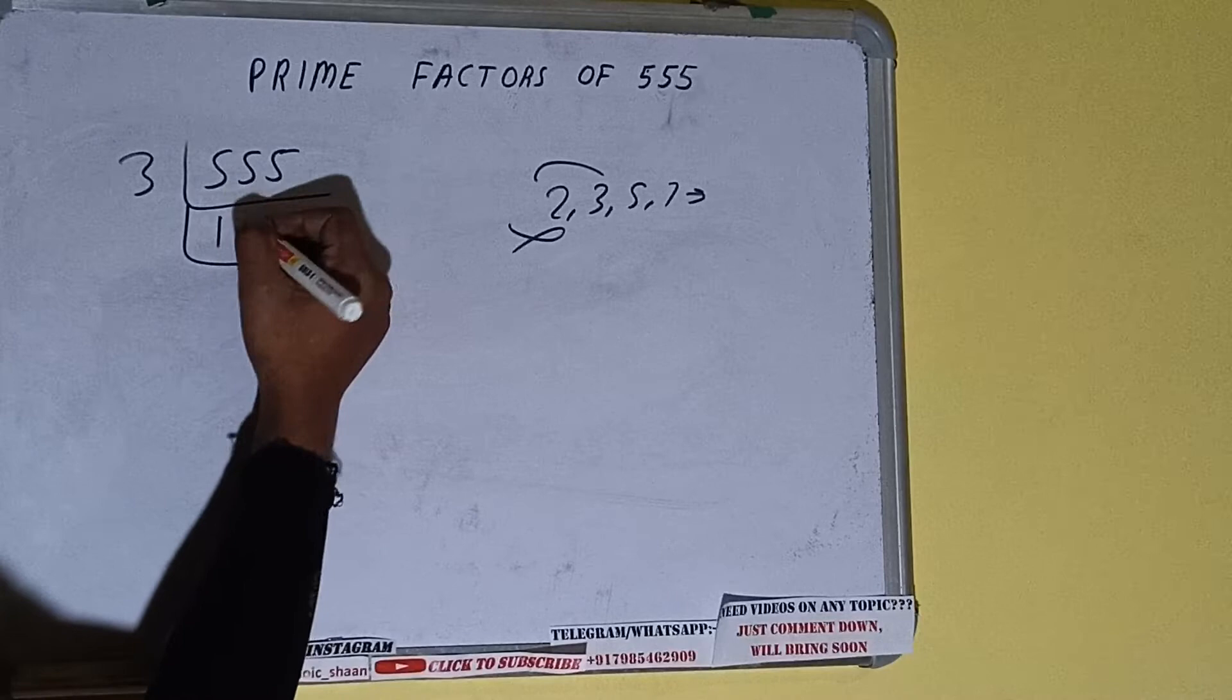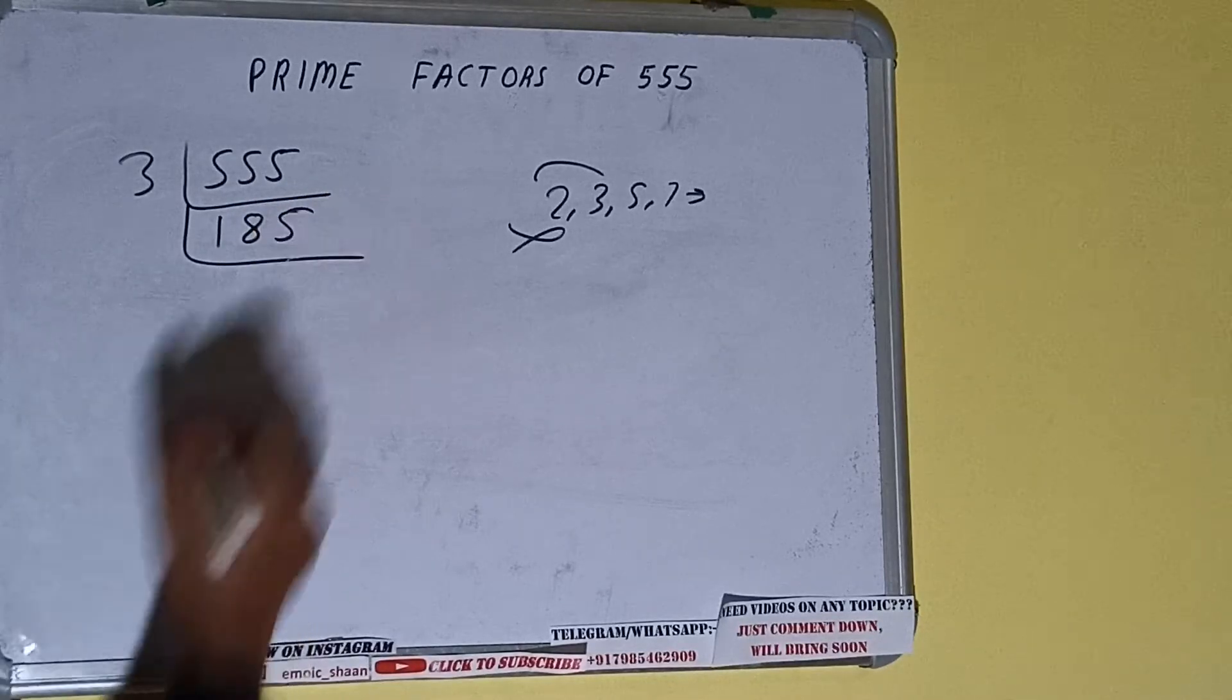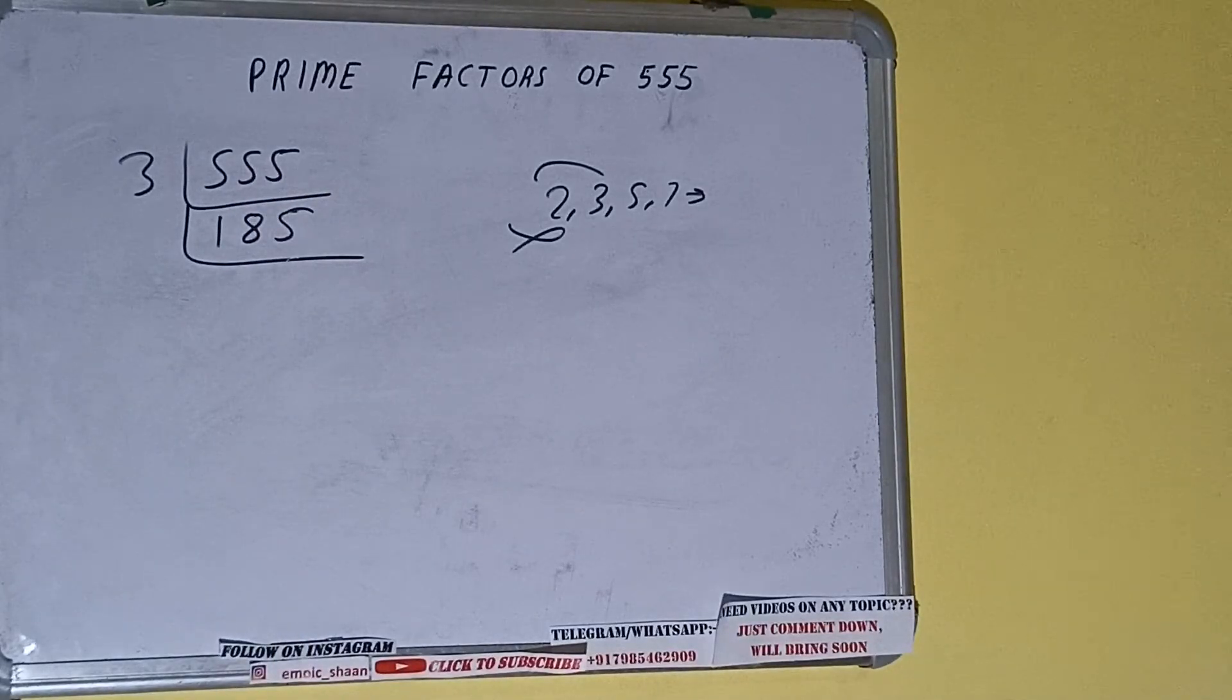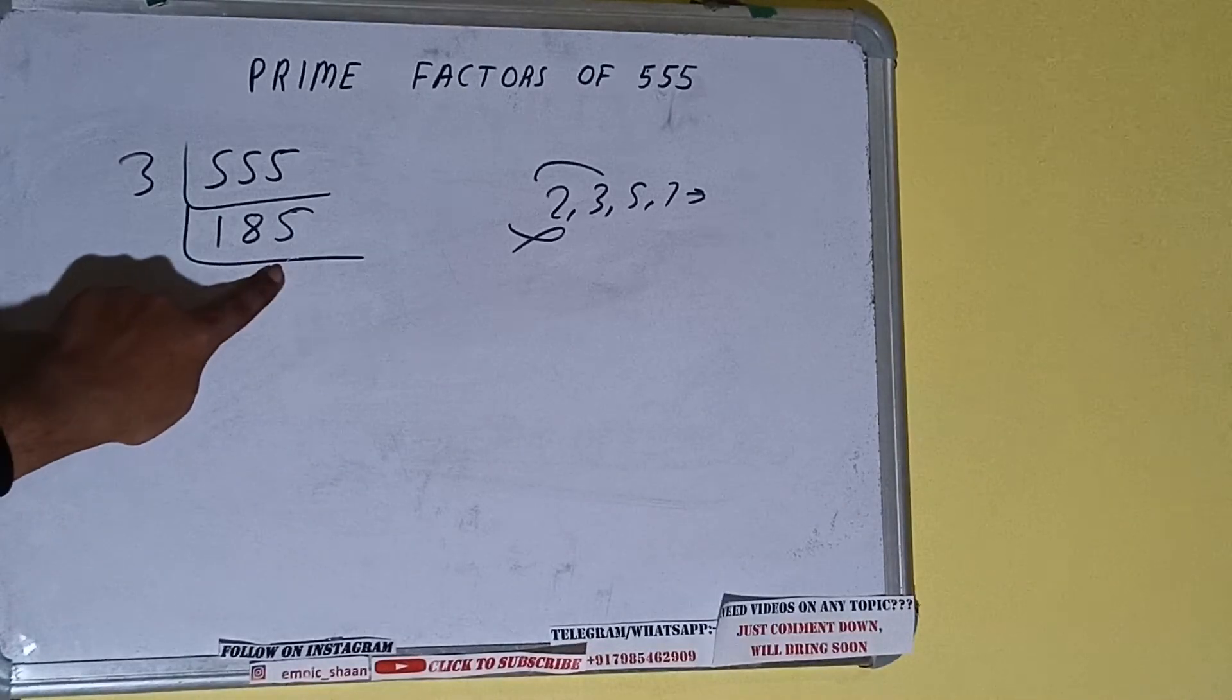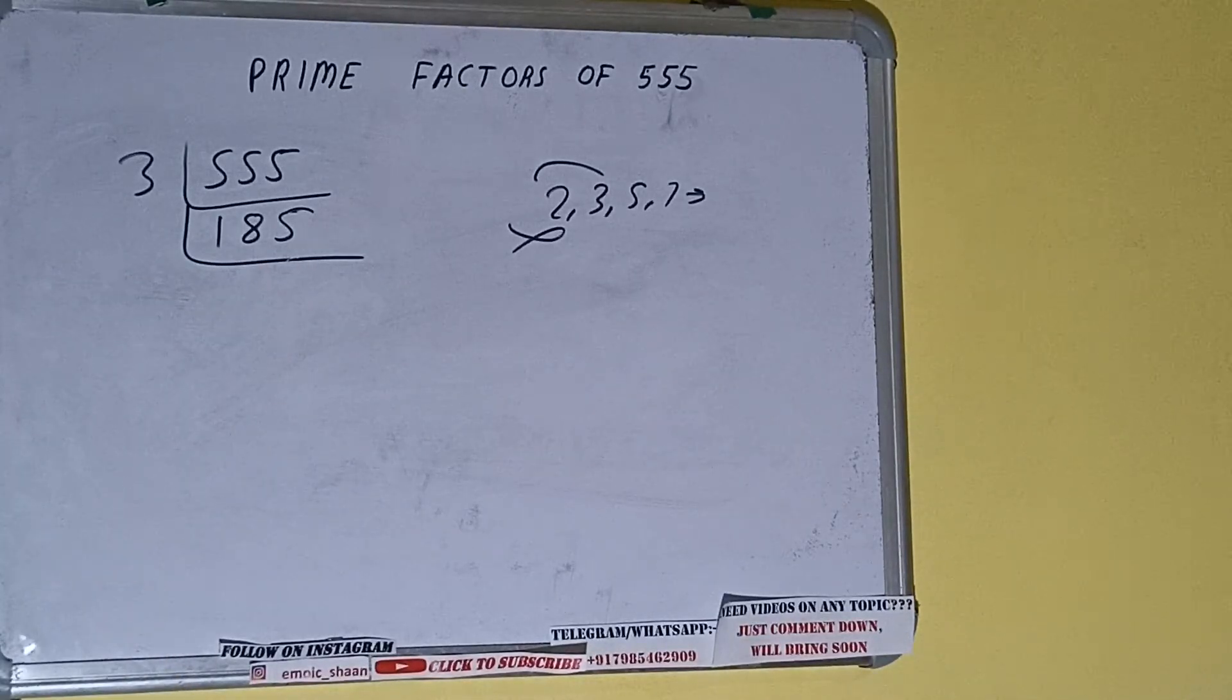Performing the division calculation: 555 divided by 3 equals 185. Now checking if 185 is divisible by 3: one plus eight plus five equals fourteen, which leaves a remainder. It is not divisible by 3.